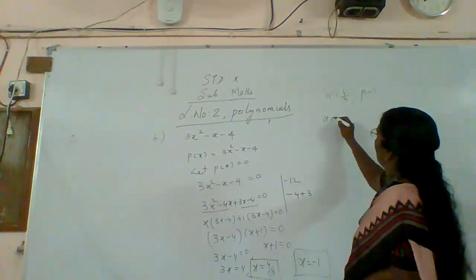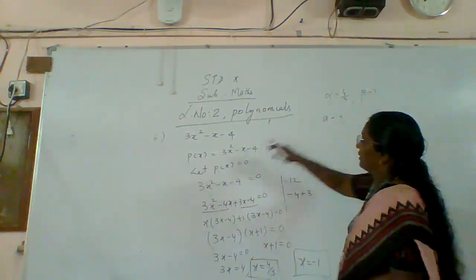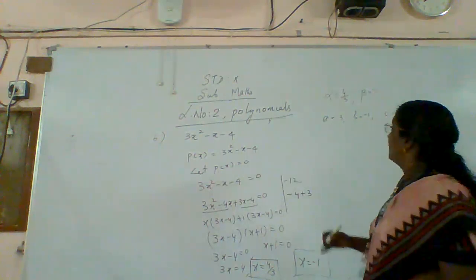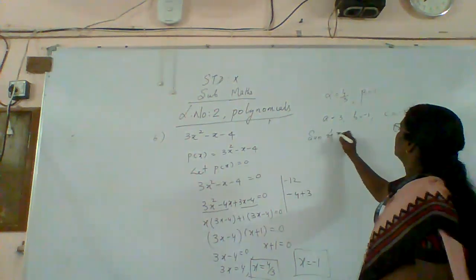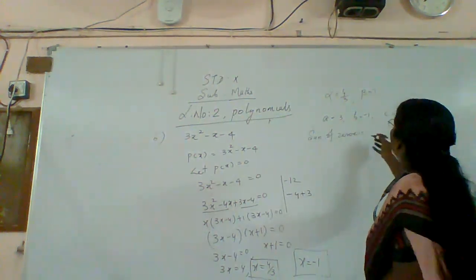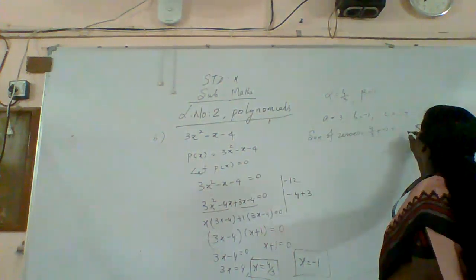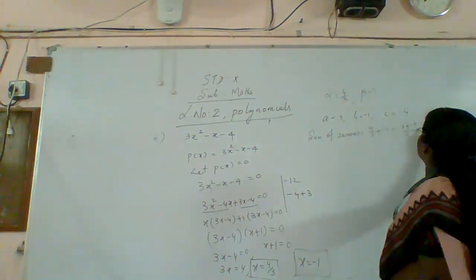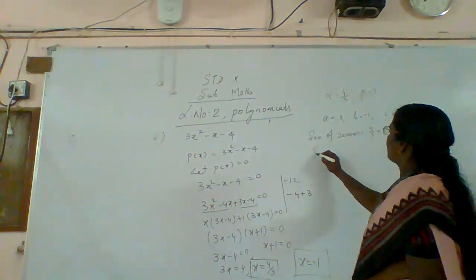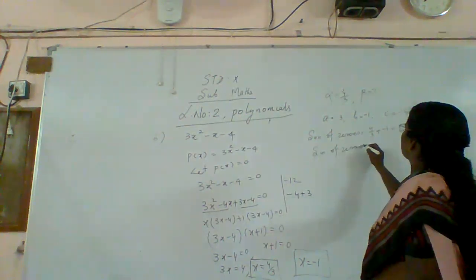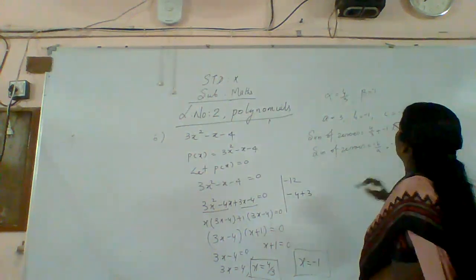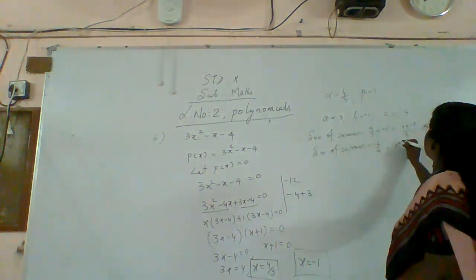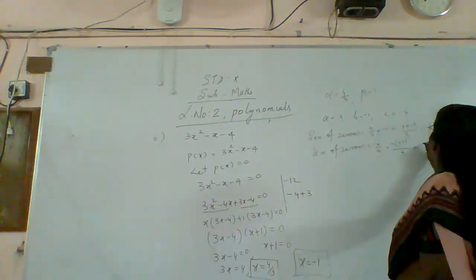A is the coefficient of x square, that is three. B is the coefficient of x, that is minus one. And c is minus four. Sum of zeros: alpha plus beta equals four by three plus minus one, that is four plus minus three over three, equals one by three. By formula: minus b by a equals minus of minus one divided by three, equals one by three. Both are equal.